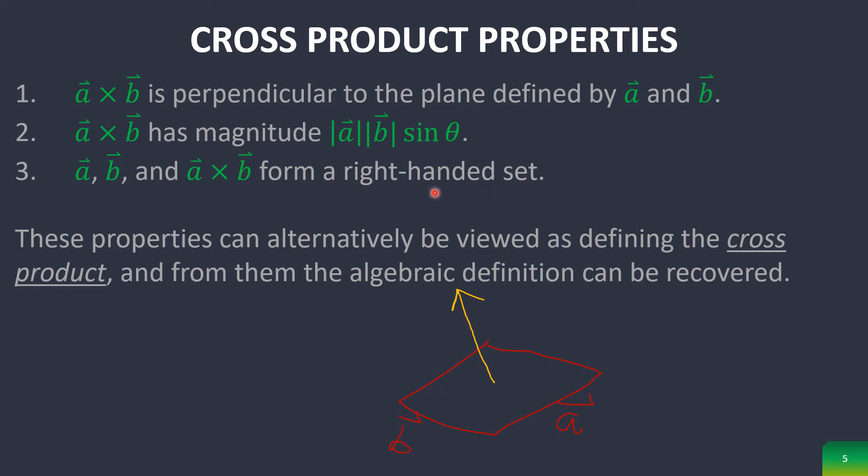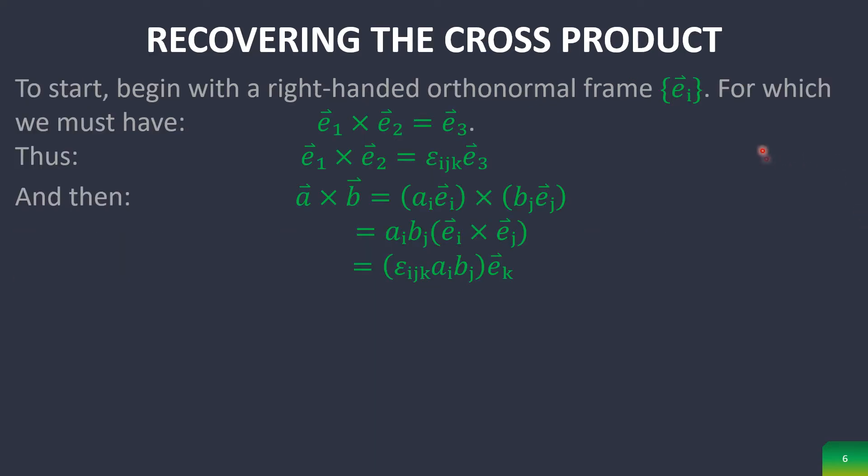Right now, just take it for granted that it's a right-handed set. Now, we can actually recover the cross product from these definitions. So to do that, we assume that we have an orthonormal frame, which if you remember, means that all vectors within are perpendicular or orthogonal and also unit length normalized, which basically defines this because the cross product is only in three dimensions. We have the first two crossed to the third one, which basically creates this right here.